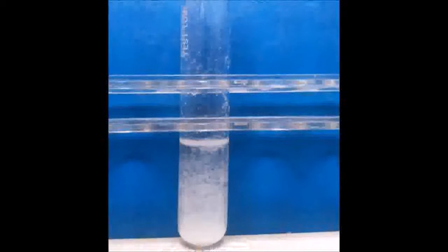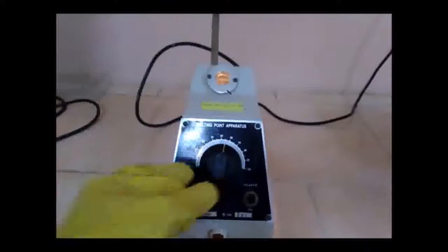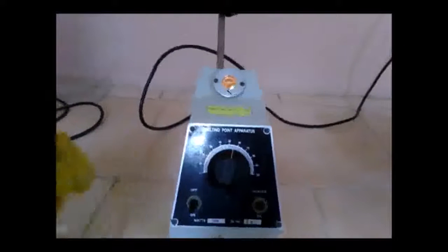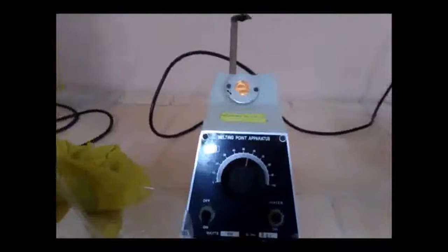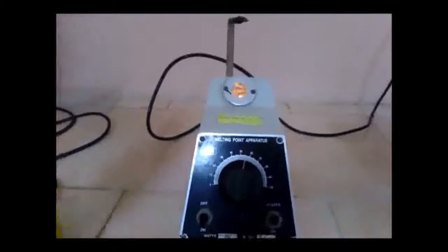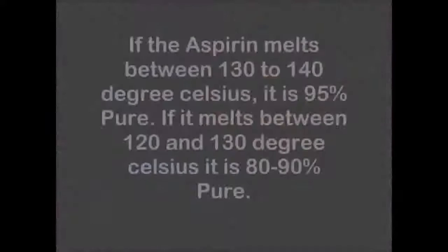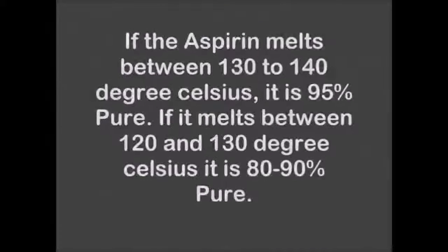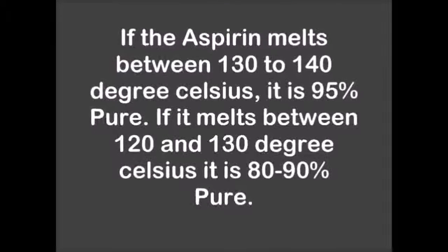Purity test: take a small amount of freshly prepared aspirin in a melting point capillary tube. Place the tube within the heating chamber of the melting point apparatus and gradually increase the temperature. If the aspirin melts between 130 to 140 degrees Celsius, then it is 95% pure.